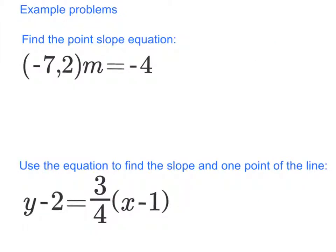Here we have an example. We want to put the point (-7, 2) with the slope of -4 in point-slope form. Let's start with the base form: y minus y₁ equals m, which is the slope, times x minus x₁.